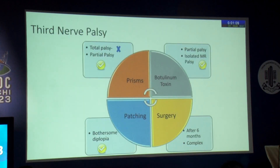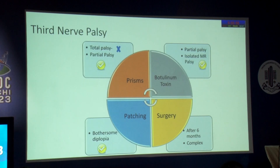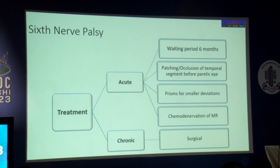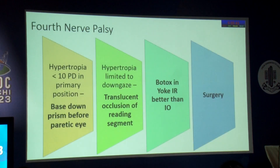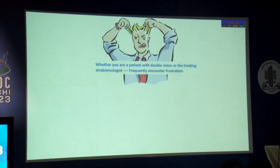The common causes of diplopia are third nerve, fourth nerve, and sixth nerve palsy. In third nerve palsy, prisms can be used in partial palsy but not total palsy; botulinum toxin can be trialed in partial palsy and isolated muscle palsies; patching can be used for troublesome diplopia; and surgery is indicated after six months. In sixth nerve palsy, chronic cases need surgical correction, but in the acute phase during the six-month waiting period, patching, prisms, or botulinum toxin can be used. In fourth nerve palsy, prisms, occluders, and botox can be used, with surgery advocated where needed.